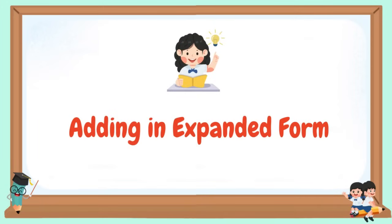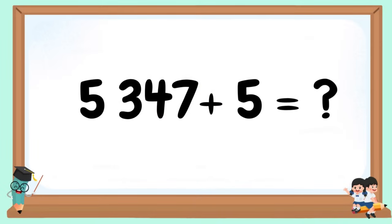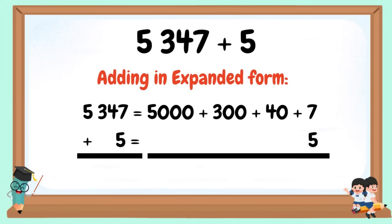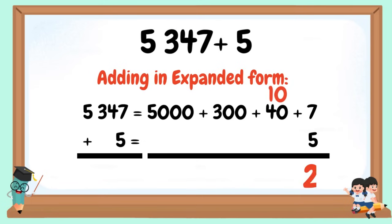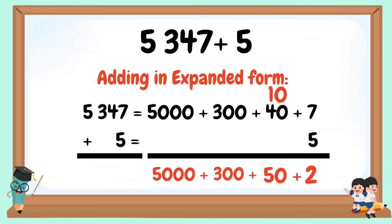Adding in expanded form: 5,347 + 5. In expanded form: 5,000 + 300 + 40 + 7. 7 + 5 = 12. Bring down 2, carry over 10. 10 + 40 = 50. Bring down the 300 and 5,000. 5,000 + 300 + 50 + 2 = 5,352.